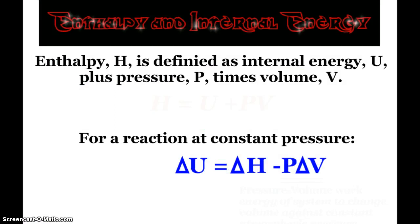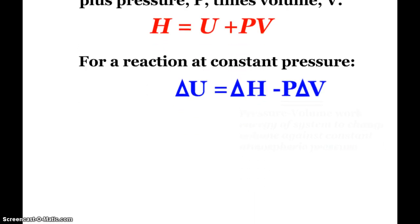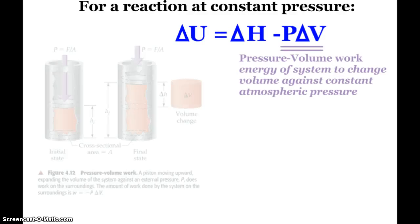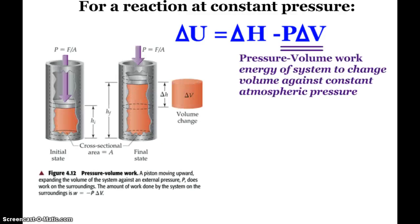We have a connection between enthalpy and internal energy, which is the type of energy we're focused on in chemistry class. Enthalpy, H, is defined as internal energy, U, plus pressure times volume: H = U + PV. If we're running a reaction at constant pressure, I can look at the change in enthalpy, the change in internal energy, and the change in volume. I can rearrange those variables to get: ΔU = ΔH - PΔV. This PΔV takes on an important name called pressure-volume work, which is the energy of a system to change volume against constant atmospheric pressure. We're focusing on reactions that produce a gas.